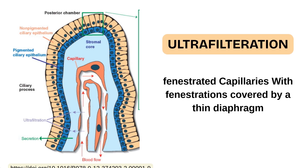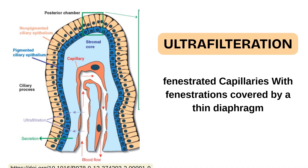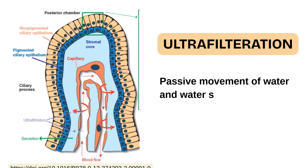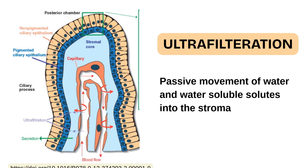And this is the first process of aqueous humor production. At this level, there is a passive movement of water and small water-soluble solutes from the plasma into the stroma of the ciliary process.